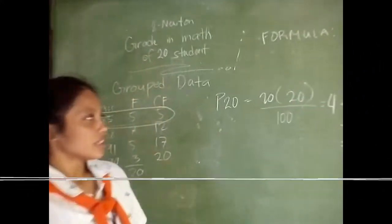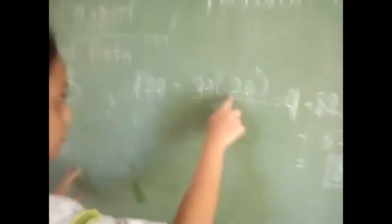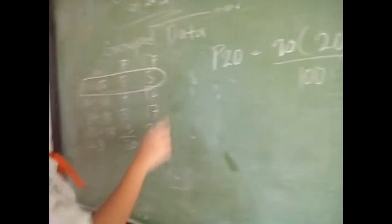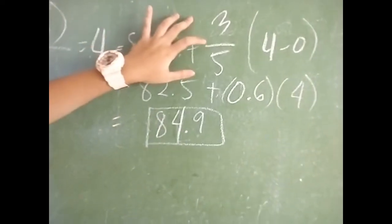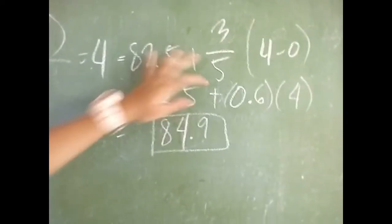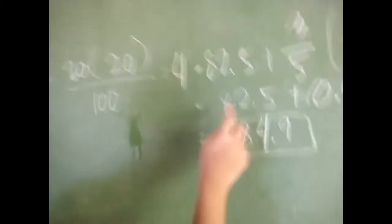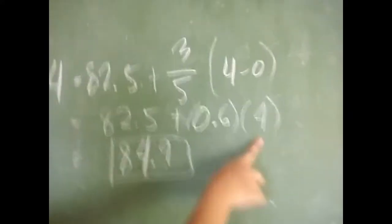For the next example, it would be P20. You find K times N divided by 100: 20 times 20 divided by 100 equals 4. The lower boundary would be 82.5, plus 3 divided by 5, times 4 minus 0. So it would be 82.5 plus 0.6 times 4. The answer would be 84.9.